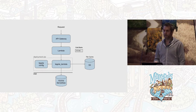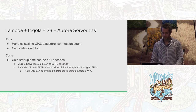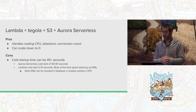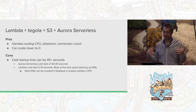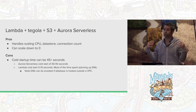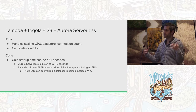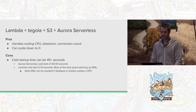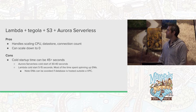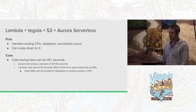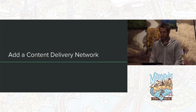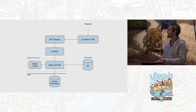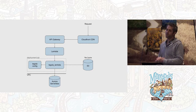Pros of Aurora serverless: it handles scaling for CPU, data store, and connection count, and can scale down to zero. I hammered it to test — it scaled up to 4,000 connections and grew really well, then scaled back down to zero as usage dropped. It handled scaling better than I expected. Cons: cold startup times can be 45 seconds plus, though most of that can be mitigated by launching outside a VPC and keeping Aurora serverless on at minimum settings.